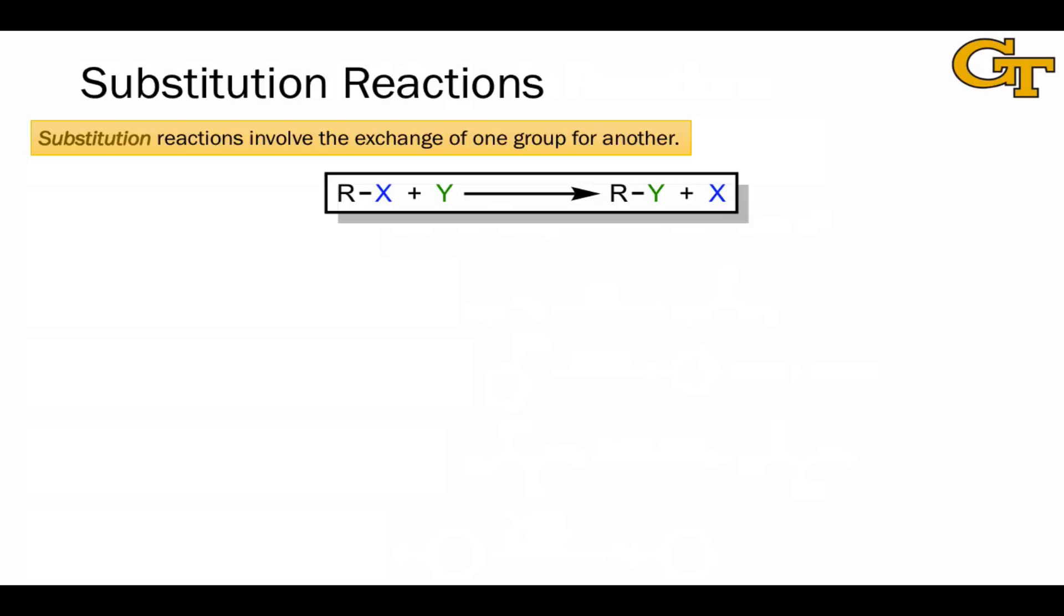Let's take a detailed look at substitution first. Substitution involves the exchange of one group for another. So, for example, in a general substrate RX, when RX reacts with Y and the group X is replaced with Y, that's a substitution reaction.